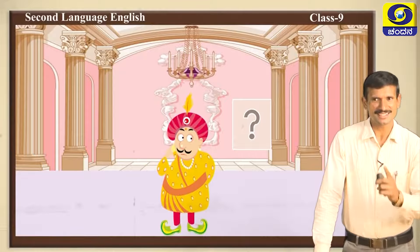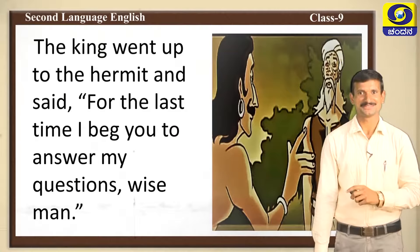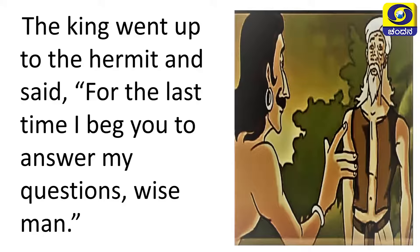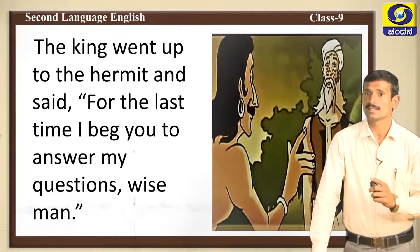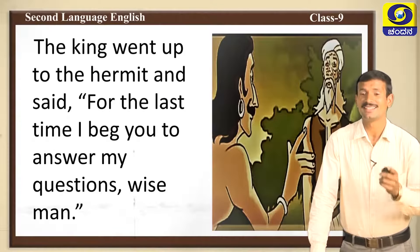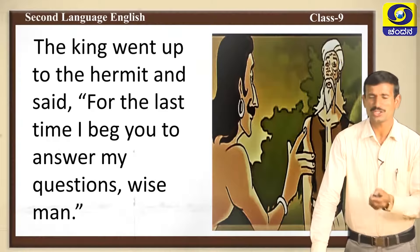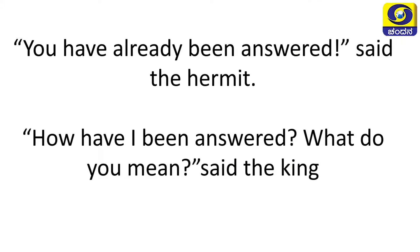Now, did the king get the answer to his questions? The king went up to the hermit and said for the last time: 'I beg you to answer my questions, wise man.' The king repeated this for the fourth time: 'I have been waiting for the answer since last day. Please give me the answers to my questions.' The hermit replied: 'You have already been answered.'